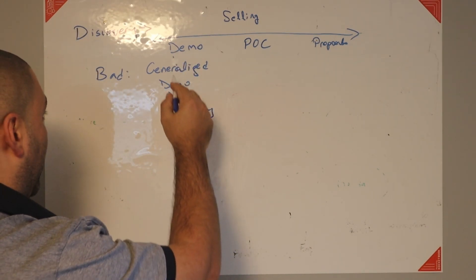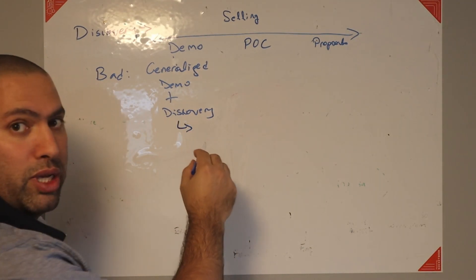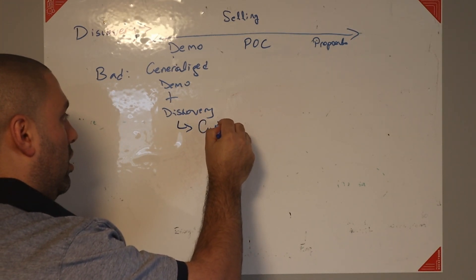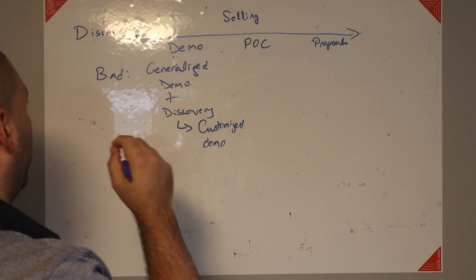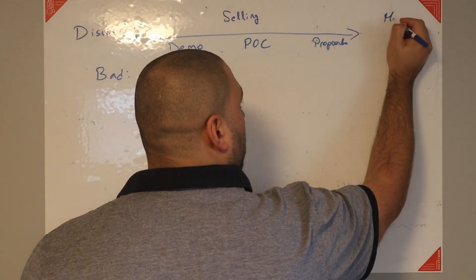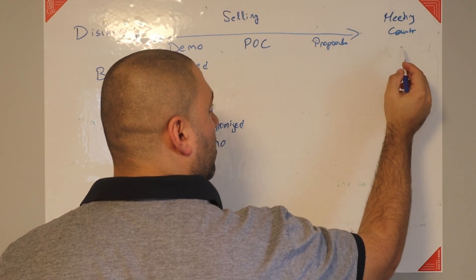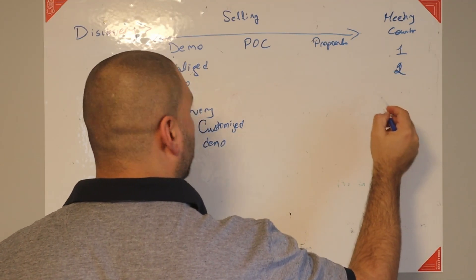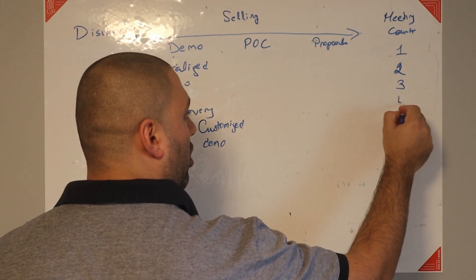So this is bad, because then after this, you might set up another call, and you get into a customized demo. So let's do a meeting counter. You already had a qualification call, a discovery call, so that's two. The first demo call, that's three. The second demo call, that's four.